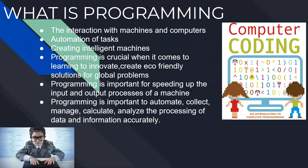Programming involves the interaction of machines and computers, the automation of tasks, and the creation of intelligent machines. Programming is crucial when it comes to innovating and creating solutions for global problems. Everything nowadays is turning into automation — people are working on creating robots that work the same way you do. You can show a robot cleaning the house today, and tomorrow when you're not home, it can clean the house by itself. That is where programming is going.